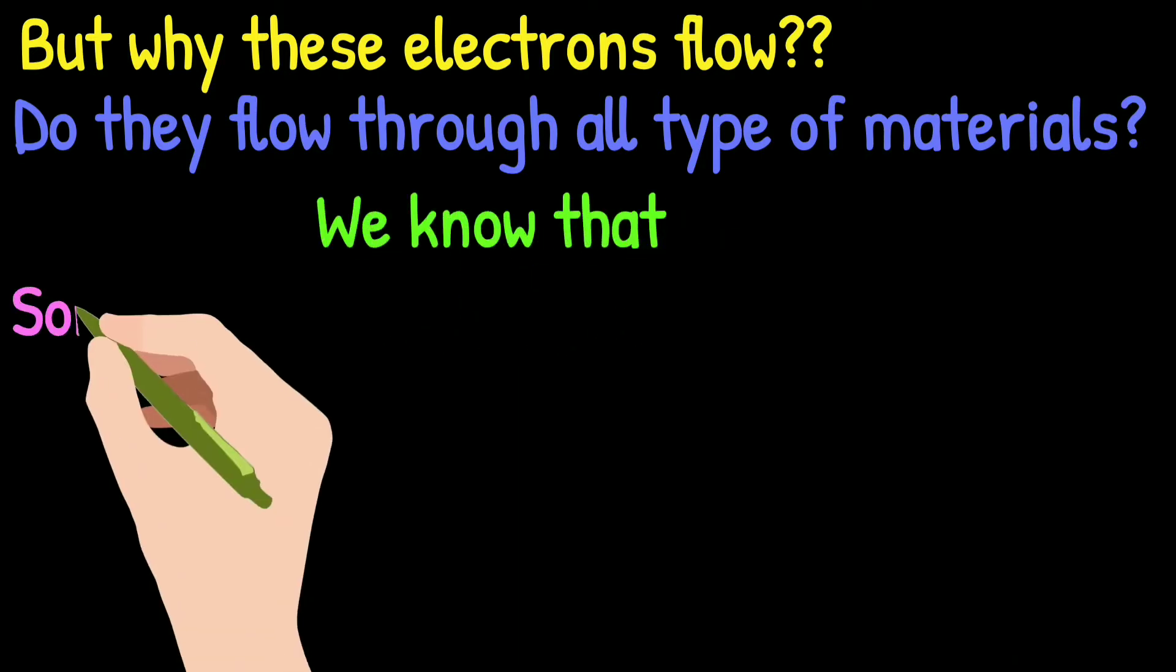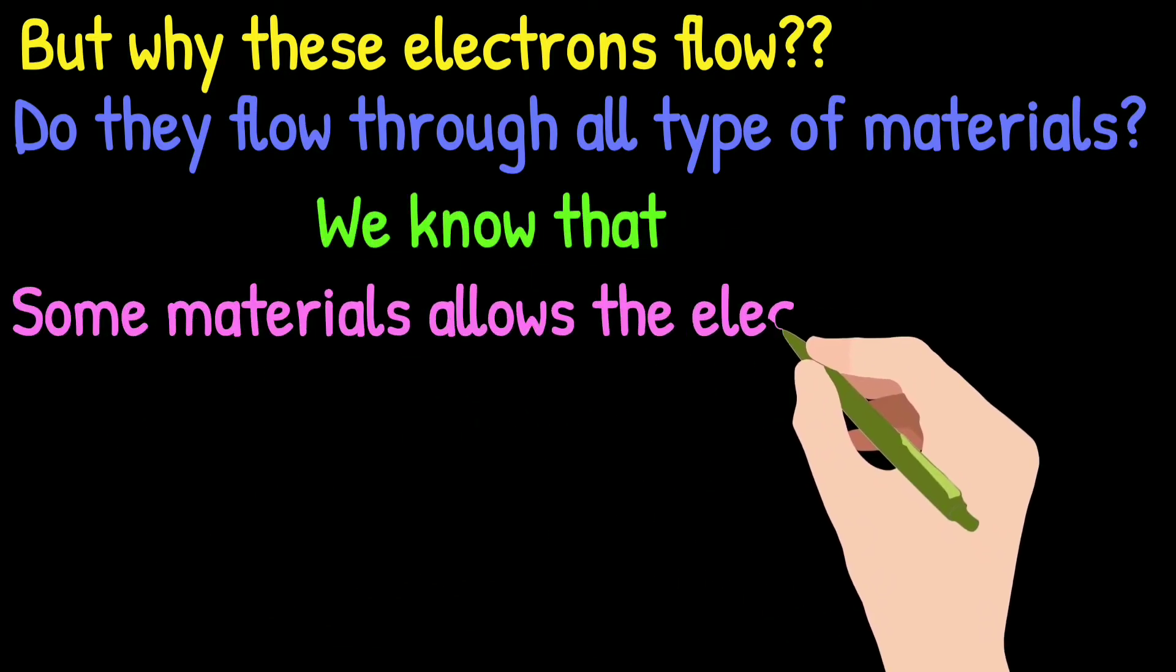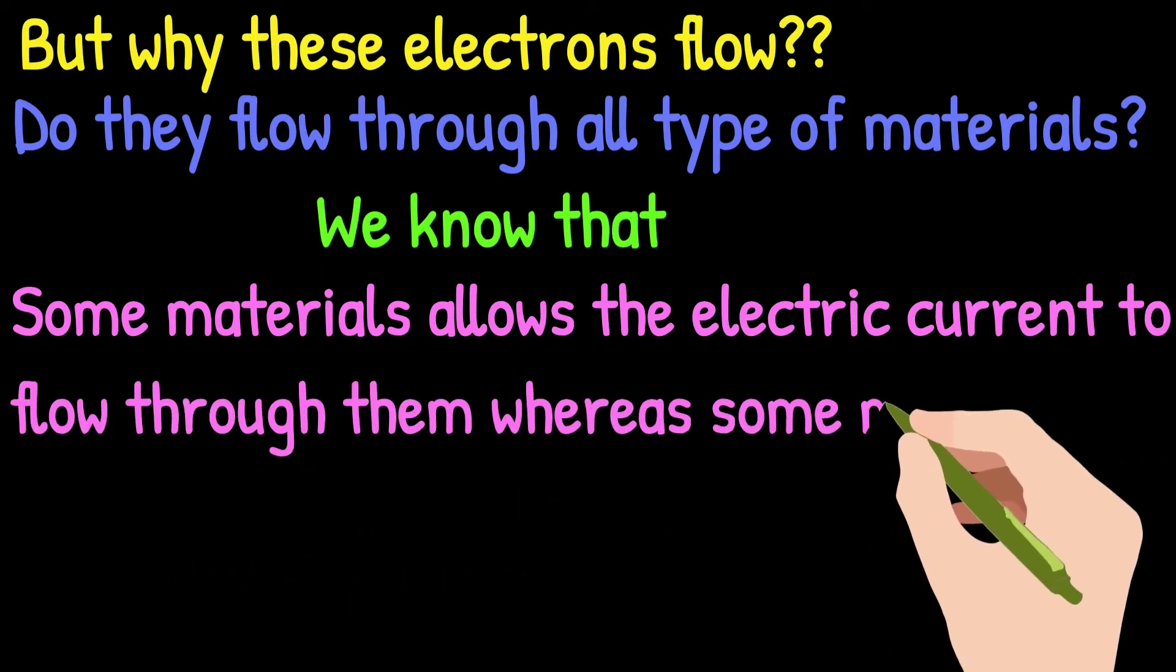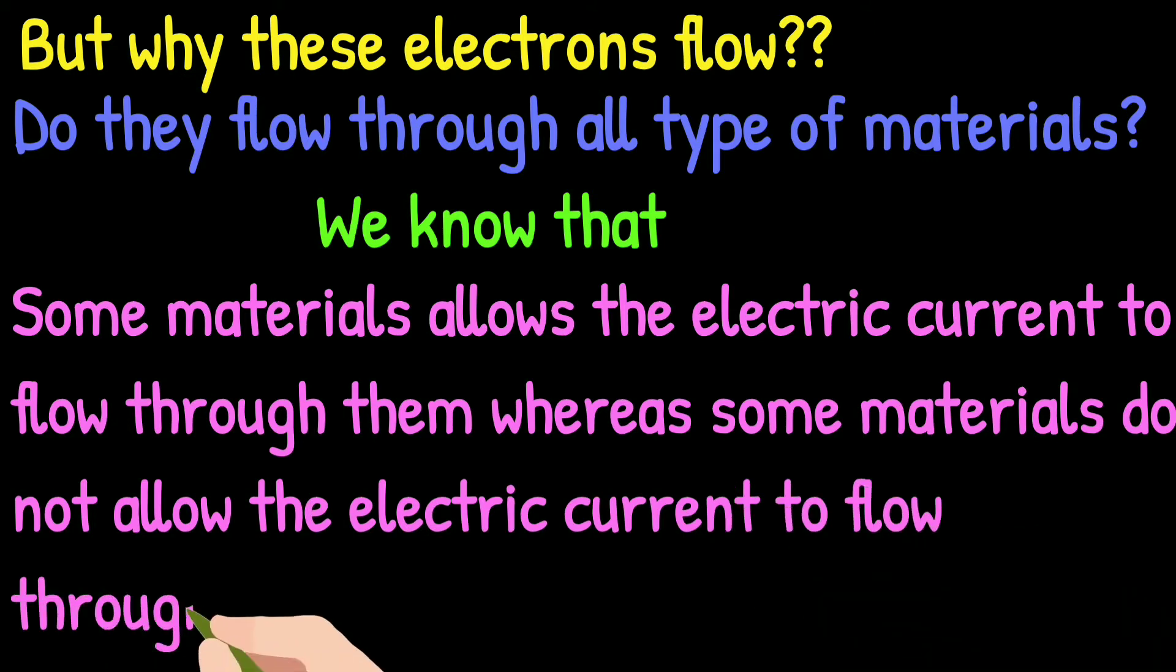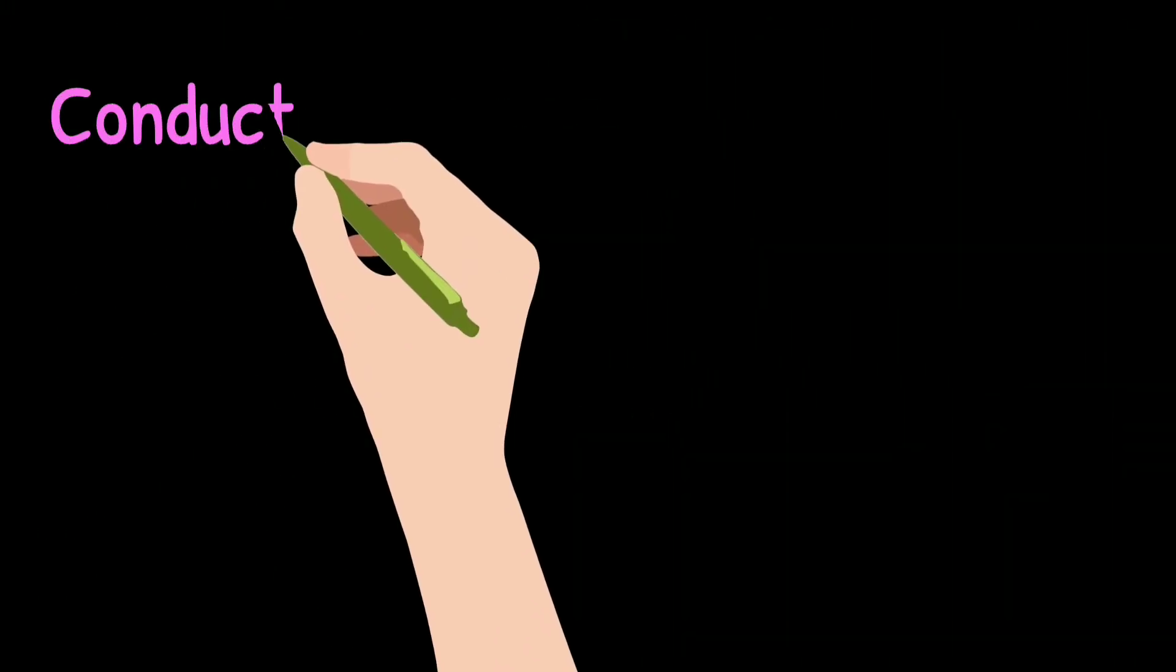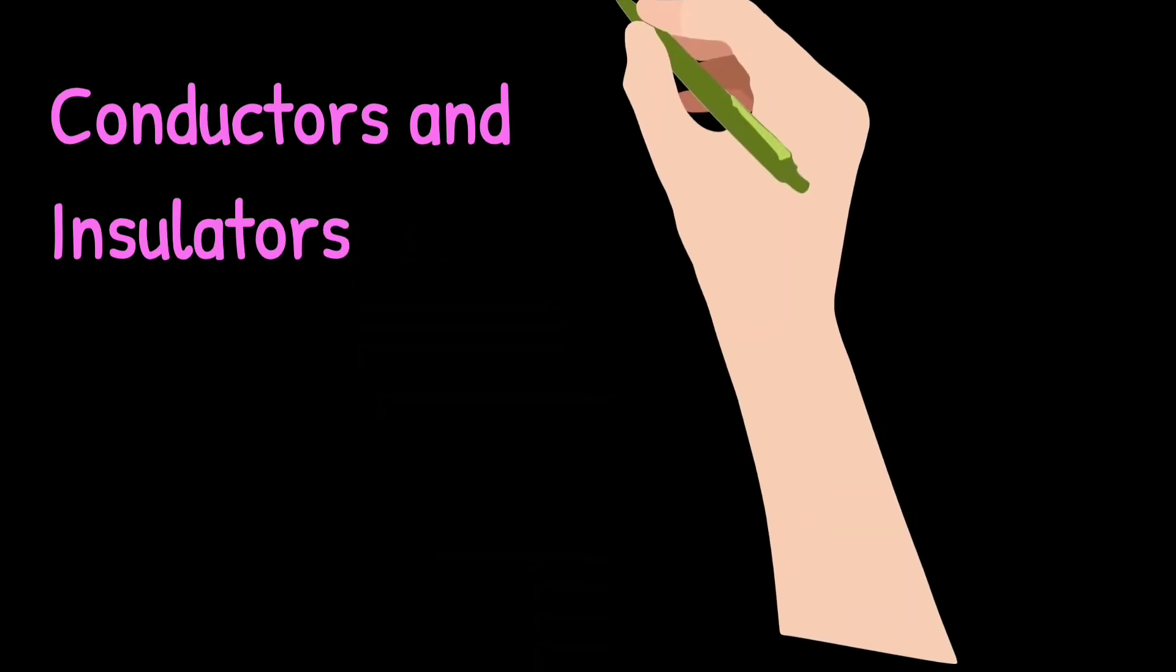We know that some materials allow electric current to flow through them, whereas some materials do not allow electric current to flow through them. We call such materials as conductors and insulators respectively.